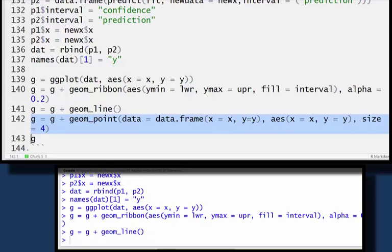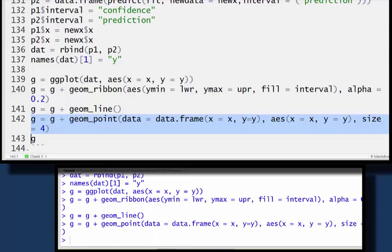And then I want my fitted line added. And then I want to add the observed data points. Now, my observed data points aren't in the data frame that I used to create the ggplot. So I have to give it a new data frame and a new aesthetic command for this particular layer. And then let me do my plot.